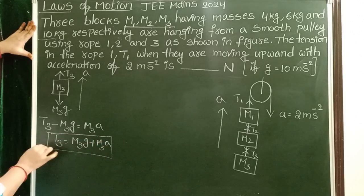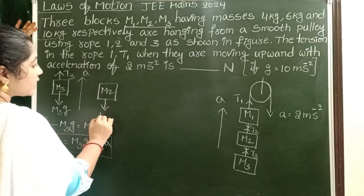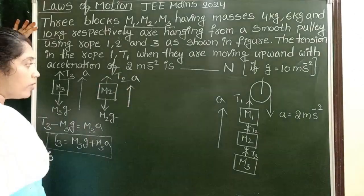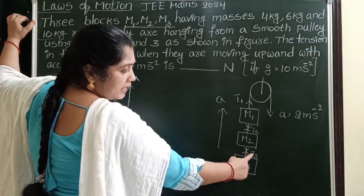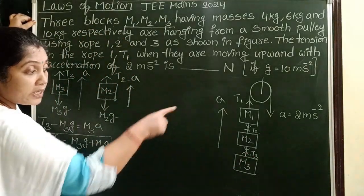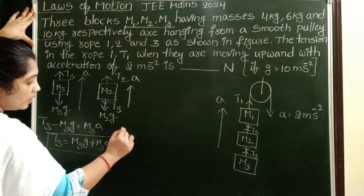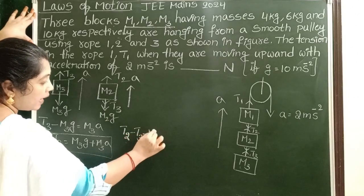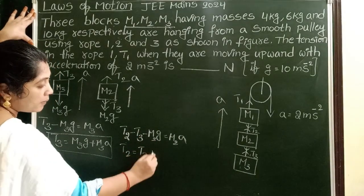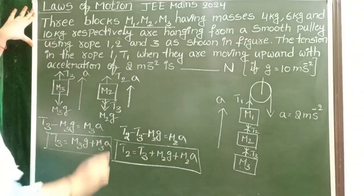Now take the second block, M2. Weight M2G is acting in the downward direction, and tensional force T2 is acting in the upward direction, with acceleration upward. Not only these two forces — by action-reaction, T3 acts upward on M3, but on M2, T3 acts in the downward direction as a pulling force. So: T2 − T3 − M2G = M2A, therefore T2 = T3 + M2G + M2A. This is the formula to calculate tensional force T2.